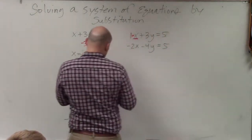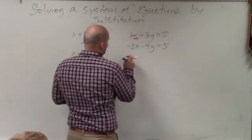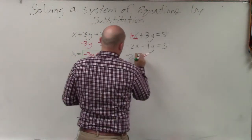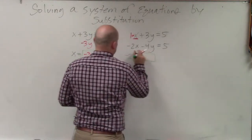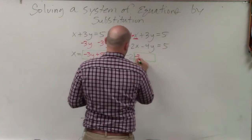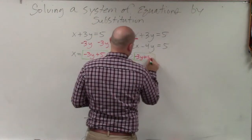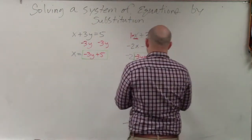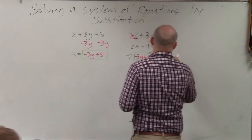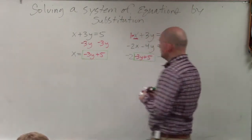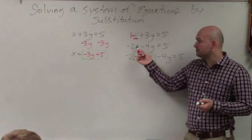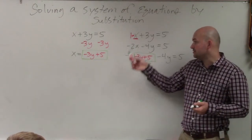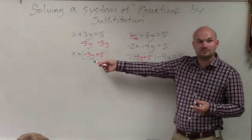So it's going to look something like this. Negative 2 times negative 3y plus 5 minus 4y equals 5. Does everybody see how I basically just replaced x in my other equation with the quantity that x is equal to? Yes?